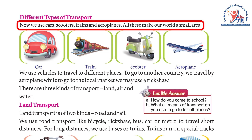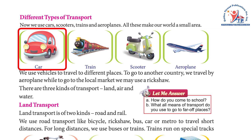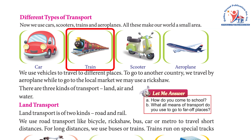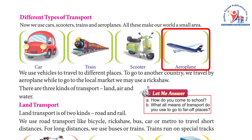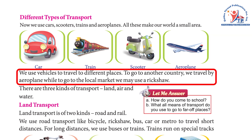Different types of transport: Now we use cars, scooters, trains, and aeroplanes. All these make our world a smaller place. We use vehicles to travel to different places — to go to another country we travel by aeroplane, while to go to the local market we may use a rickshaw.